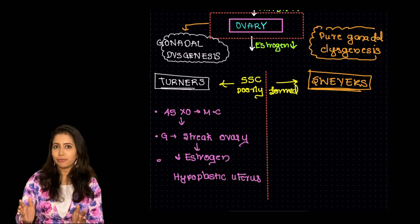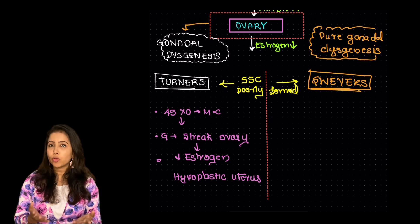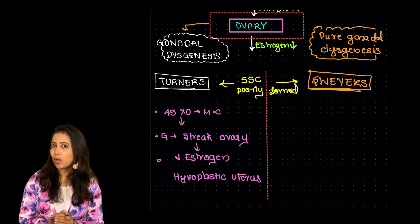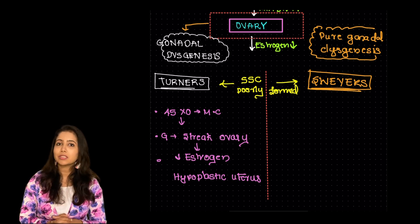They can have some typical features such as there could be webbed neck, the widely spaced nipples, poorly formed breasts, low hairline are some of the typical features that are seen with this.